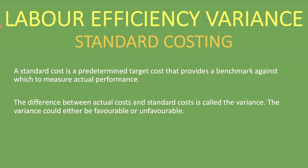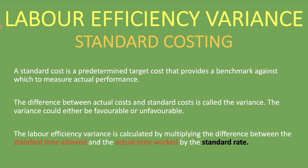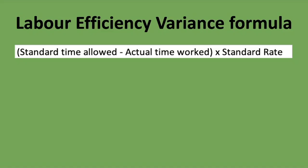The labor efficiency variance is calculated by multiplying the difference between the standard time allowed and the actual time worked by the standard rate. Our formula is: Standard Time Allowed minus Actual Time Worked, times the Standard Rate. The standard time allowed is expressed in hours — specifically the total hours that would have been allowed for the actual units produced.